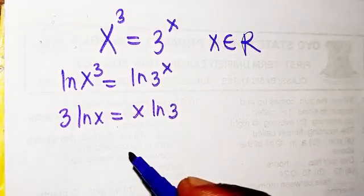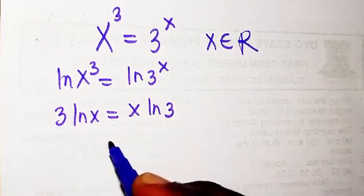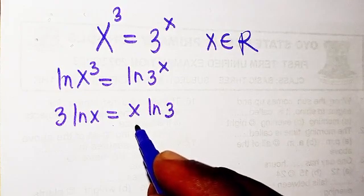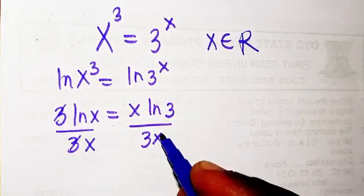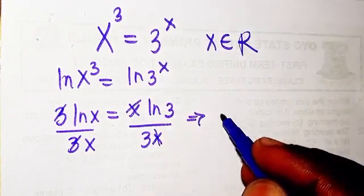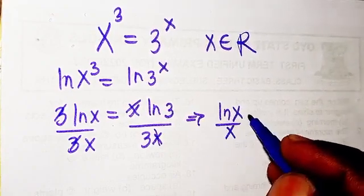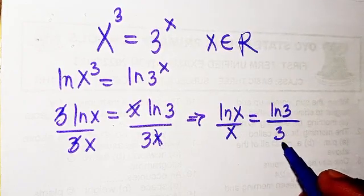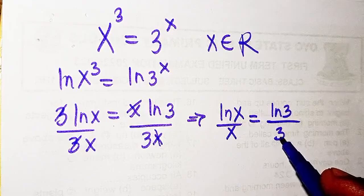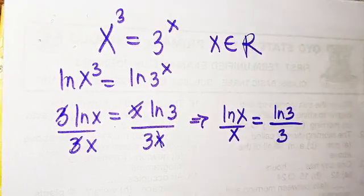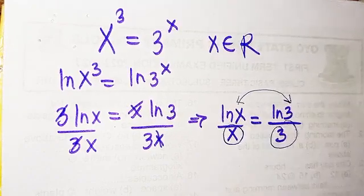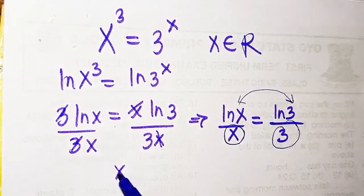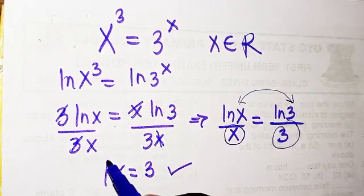We separate the variables and constants by dividing both sides by 3x. The 3 cancels on the left and the x cancels on the right, giving us ln(x)/x = ln(3)/3. Comparing both sides, we can see x = 3 satisfies this, confirming x = 3 is the first solution.